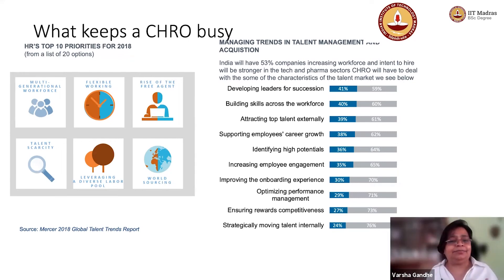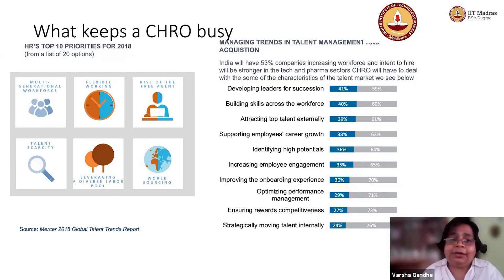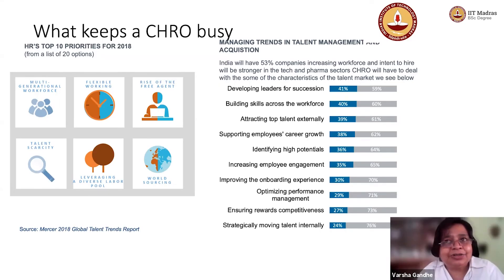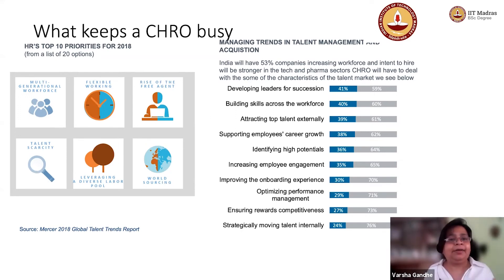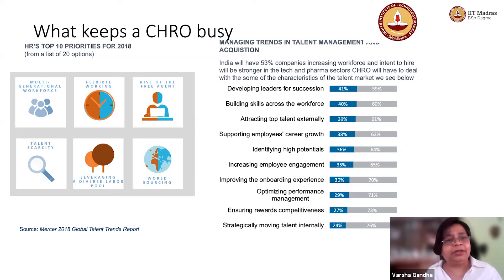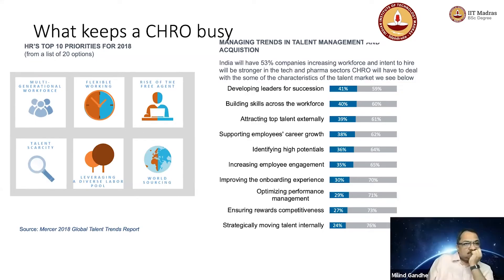Developing leaders for succession, building skills across the workforce, making sure you're getting top talent where you need leadership perspective - all of this requires balancing flexible working. HR people are also currently dealing with the rise of the free agent or gig worker. In India there are labor and legislation issues which may not make it easy for gig workers, but today you do see business models - whether Swiggy, Zomato, or Uber - these are essentially gig workers. You also have white-collar gig workers. How do you make sure the gig worker is equally productive as a full-time employee?